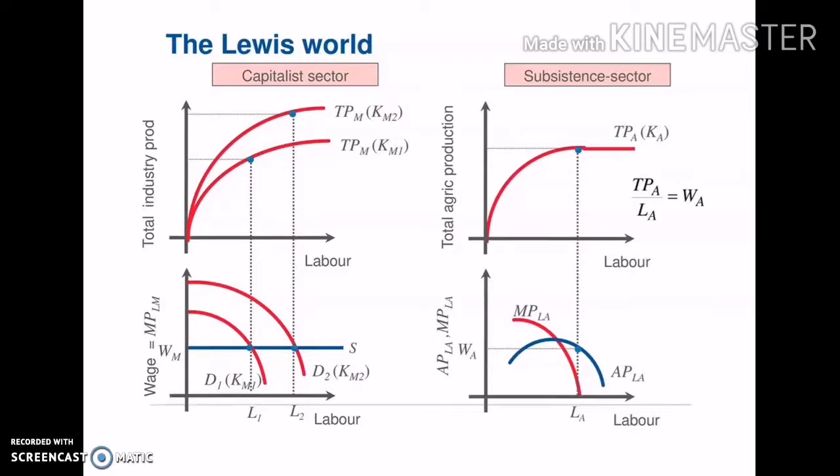The right portion of the diagram shows the subsistence sector. The upper portion shows the total agriculture production. We can see that the subsistence sector is abundant with labor supply. At LA amount of labor force, the production function reaches its maximum and marginal productivity reaches almost zero. The marginal productivity of labor in the subsistence sector is shown in the lower figure — marginal productivity at point LA equals zero. If we apply additional labor force beyond LA, the total productivity becomes stagnant or constant.